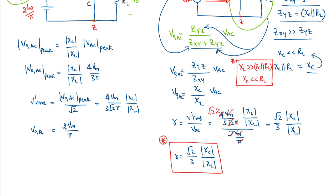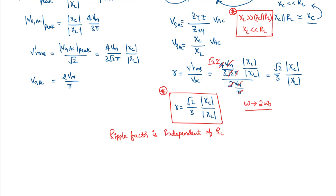An important note: wherever ω appears in XC and XL, substitute 2ω₀, since the AC component considered is the second harmonic — the most dominant component at the output of the full wave rectifier. Also notably, the ripple factor is independent of the load resistor, provided both assumptions — XC ≪ RL and XL ≫ (XC ∥ RL) — remain valid.